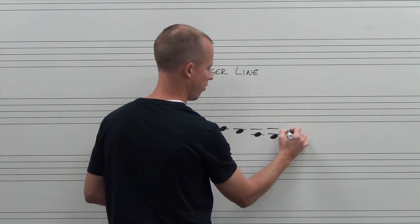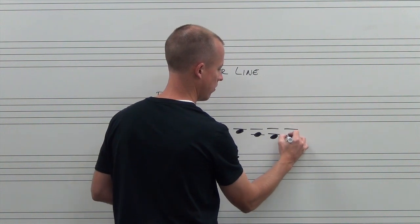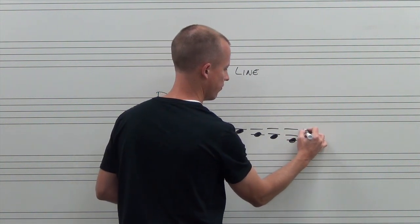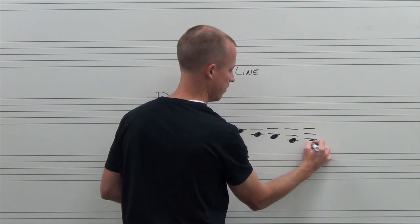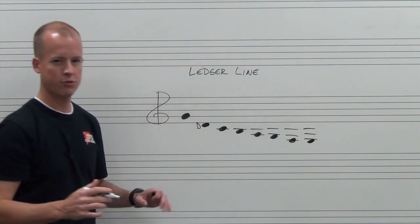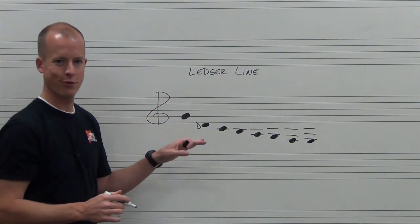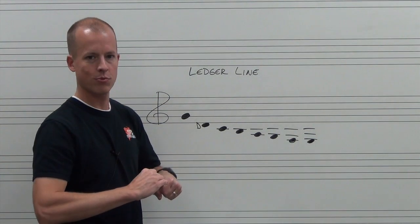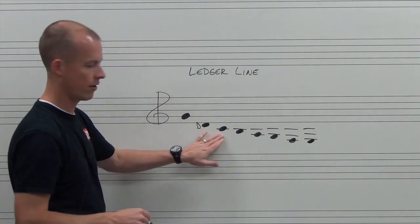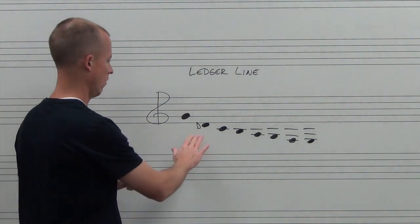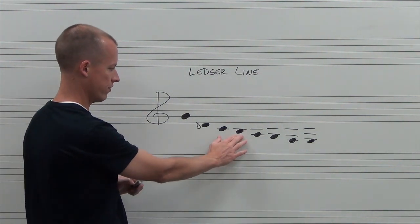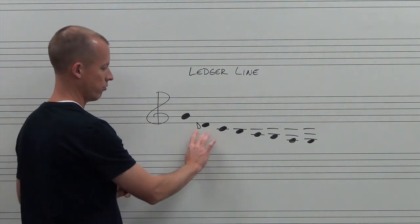Clarinets can go all the way down as far as this note. So clarinets will need to get good at reading these lower notes, especially trumpets will have some notes down there. Flutes go down as far as this, and saxophones go down as far as this note.